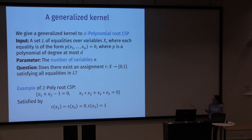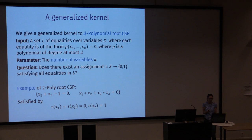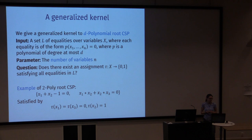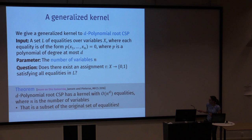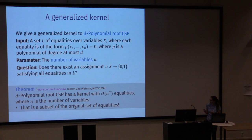As an example, consider two polynomials: X1 + X2 - 1 = 0 and X1*X2 + X2*X3 = 0. This is an instance of 2-polynomial root CSP since the second polynomial has degree 2. We can satisfy it by setting X1 = X3 = 0 and X2 = 1. The nice thing is we know a kernelization result for this problem: it has a kernel with order n-to-the-d polynomial equalities, where n is the number of variables and d is the degree, and satisfying assignments to the subset are also satisfying to the original set and vice versa.